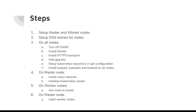Using the kubeadm join command you can join those worker nodes into the cluster. Then on the master node you need to label the worker nodes as worker nodes, and with that the cluster will be available for you to consume. You can start developing applications and deploying them on the nodes. Now let's get into the details of all these items one by one.